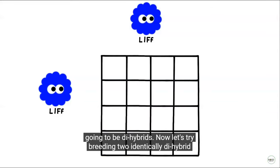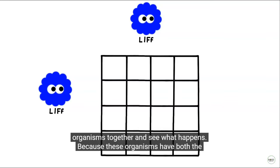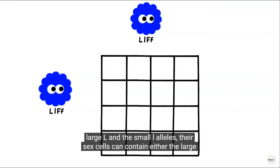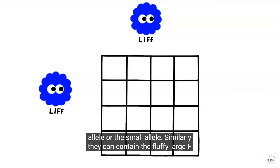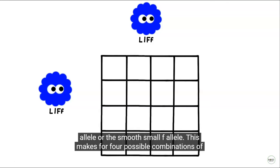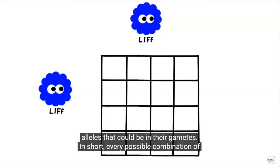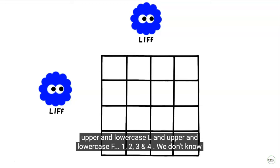Now let's try breeding two identically dihybrid organisms together and see what happens. Because these organisms have both the large L and the small L alleles, their sex cells contain either the large allele or the small allele. Similarly, they could contain the fluffy large F allele or the smooth small F allele. This makes for four possible combinations of alleles that could be in their gametes — every possible combination of uppercase and lowercase L and uppercase and lowercase F: 1, 2, 3, and 4.